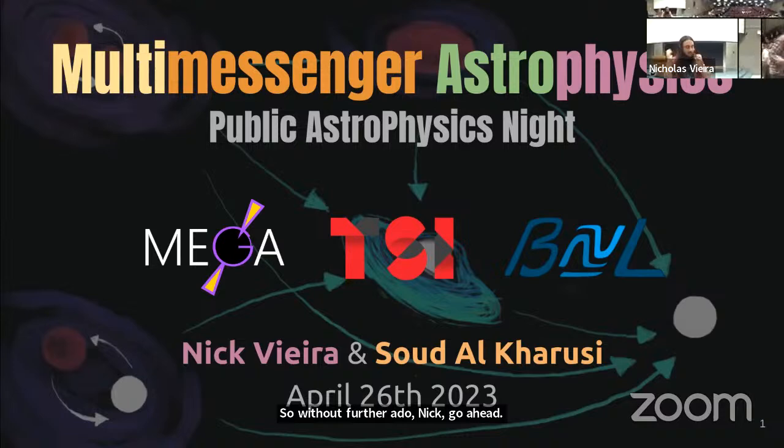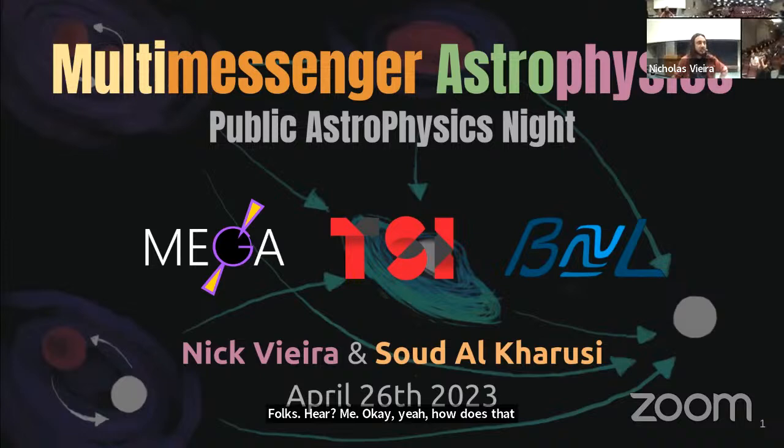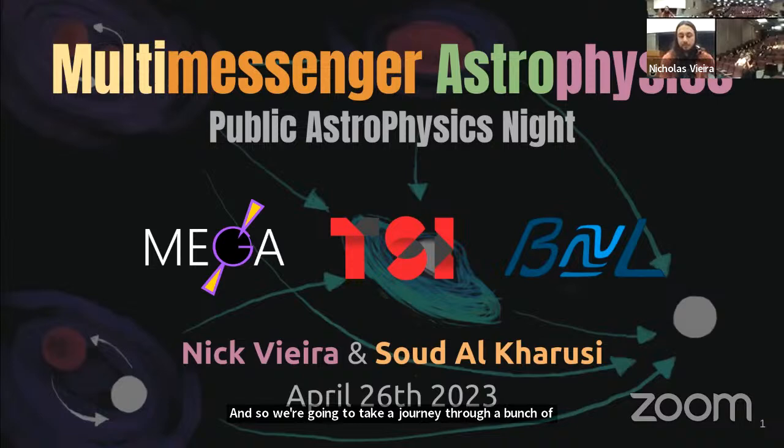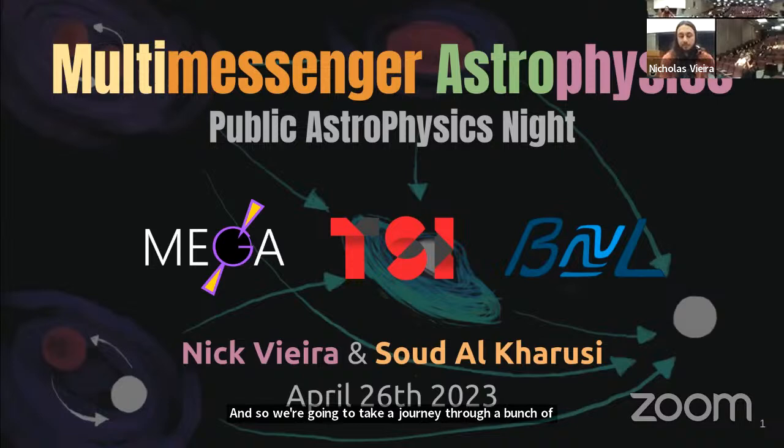Hi folks. As Carolina said, my name is Nick, and this is Sud over here, who we will hear from in a little bit. We want to talk to you today about something called multi-messenger astrophysics. We're going to take a journey through a bunch of the different cosmic messengers. I'm going to start off by talking about electromagnetic and gravitational waves. Electromagnetic waves you're probably already familiar with — it's light. But gravitational waves are maybe a bit less familiar, so we're going to break that down as well.